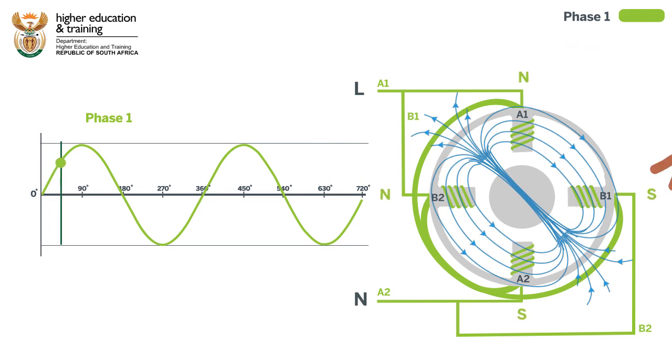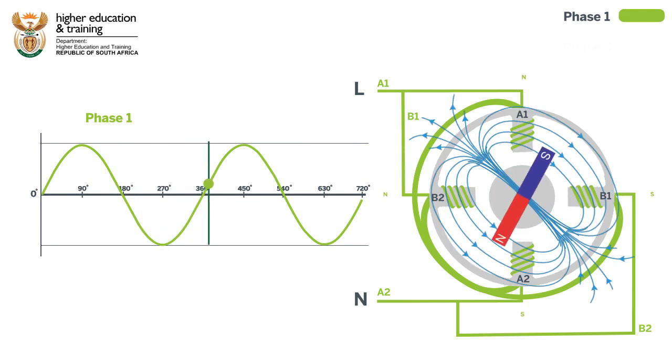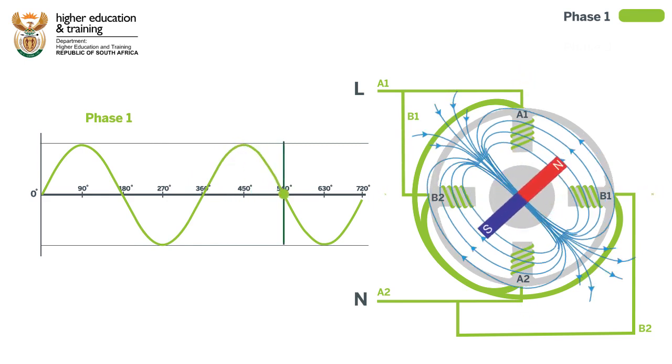If we give the rotor an initial push, it will rotate because of the extra external force we applied. This extra force and the flipping stator field polarity would be enough to keep it rotating.